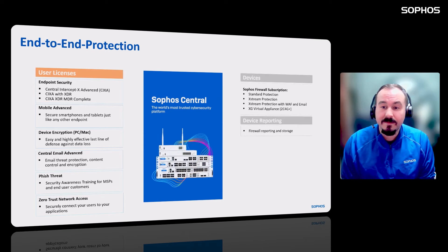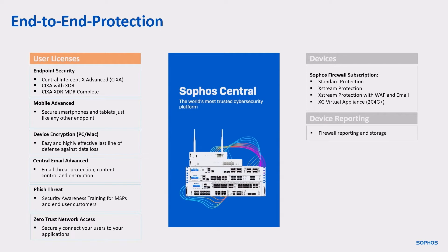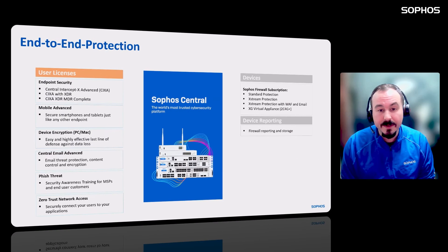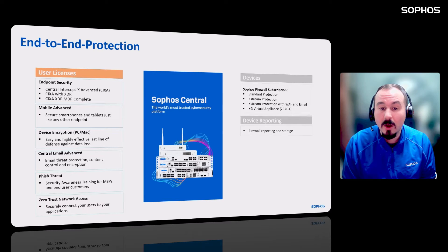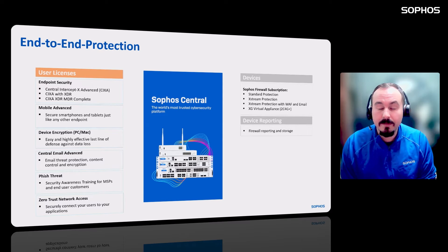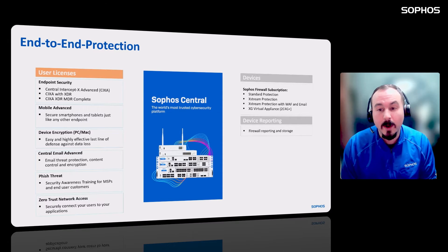We also have device licensing. All of the firewall software subscriptions are available — standard protection, Xtreme, Xtreme with WAF and email, as well as virtual appliances. Sophos does not have hardware as a service, so when you're ready to buy a firewall, you would traditionally purchase the hardware up front, with software subscriptions that can be monthly. If you're looking at a virtual firewall as a service, you can have all of that monthly — both the appliance and the subscription.